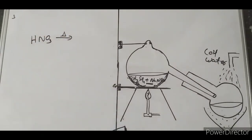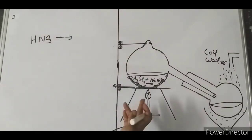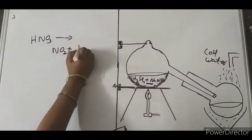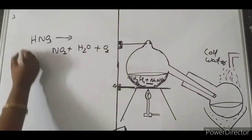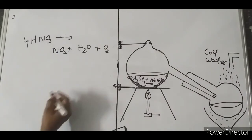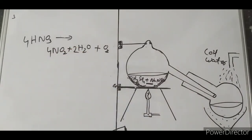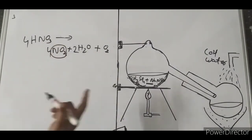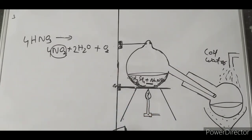NO2 is produced because if temperature regulation is not maintained and more heat is given, HNO3 decomposes. The balanced decomposition equation is: 4HNO3 → 4NO2 + 2H2O + O2. This NO2 present in the acid changes the colorless liquid to yellowish in color.